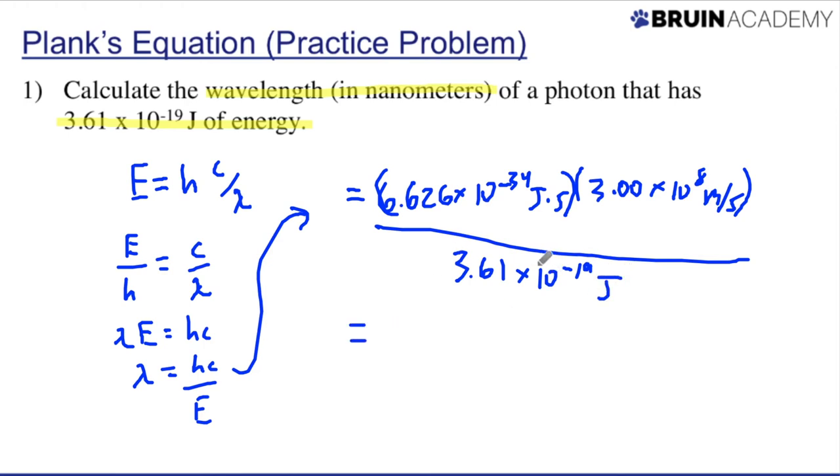Times 10 to the negative 19 joules, and then I should get, finally, my wavelength, which is going to be in meters. And notice here that my units do cancel a lot. My joules cancel out with my joules down here. My seconds here cancel a second, so I'm left with meters. And when I solve for this, I should get 5.51 times 10 to the negative 7 meters.